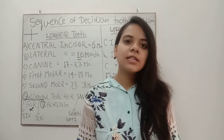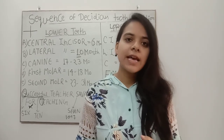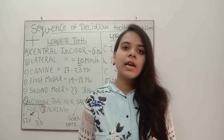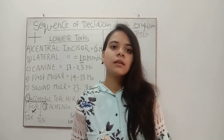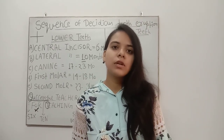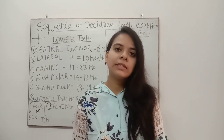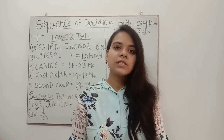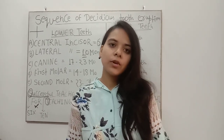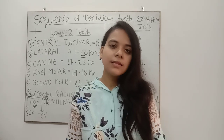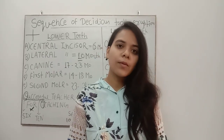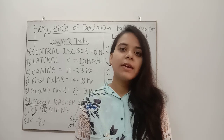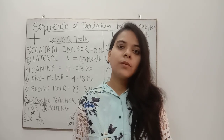The permanent dentition contains incisors, lateral incisor, premolars, and molars. People have some confusion remembering which dentition contains premolars. The simple trick: P refers to permanent and P refers to premolar. So permanent dentition contains premolars.